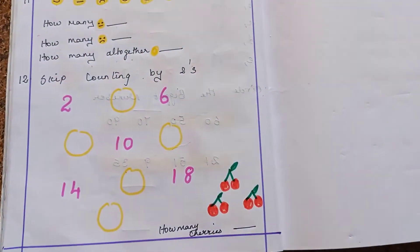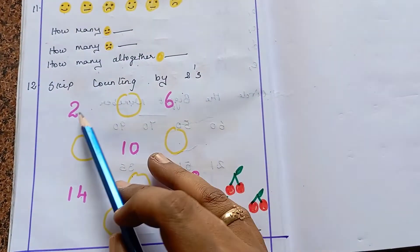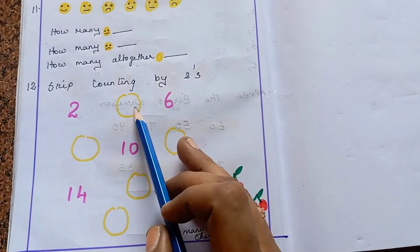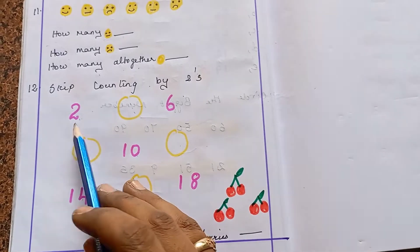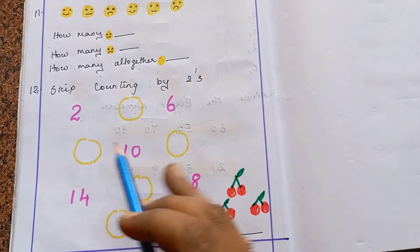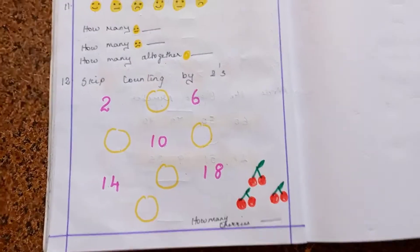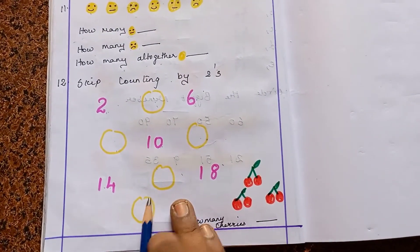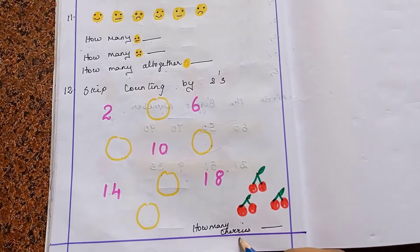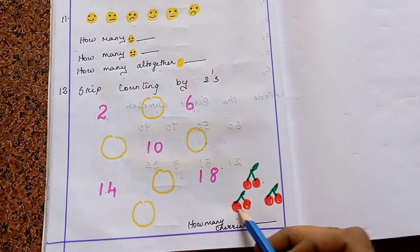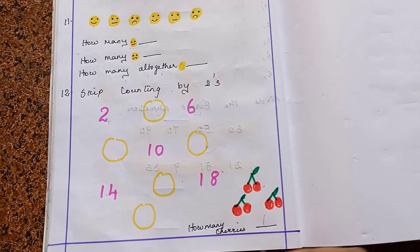The next question is: skip counting by 2s. Here the kids write the counting of 2. First one is 2, 2 times is 4, 3 times is 6, 4 times is 8, then 10, 12, 14, 16, 18, 20. Also, you can see some cherries — how many cherries are here? Counting by 2: 2, 4, 6. So 6 is written here.